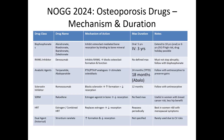There is no defined maximum duration for denosumab. Most importantly, it should not be stopped abruptly and should always be followed with bisphosphonate therapy. If we stop this medication abruptly, it will lead to more rapid bone loss.